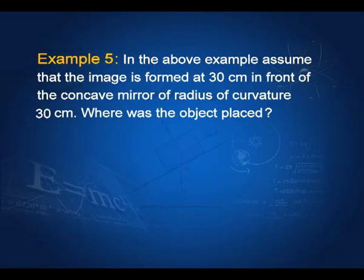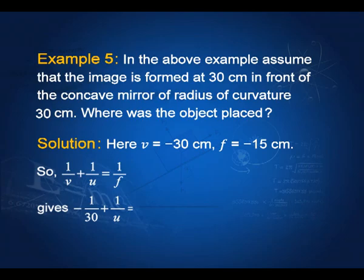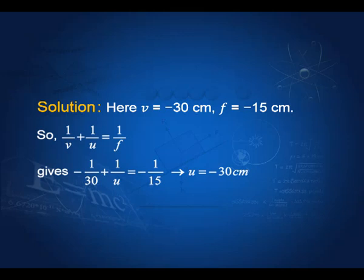Take another example. Assume the image is formed at 30 centimeters in front of a concave mirror of radius of curvature 30 centimeters. Where was the object placed? We have v equal to minus 30 centimeters and f equal to minus 15 centimeters. The mirror formula 1/v + 1/u = 1/f — remember this as a key formula for the concave mirror, always applying appropriate signs — gives u equal to minus 30 centimeters. So v and u are both minus 30, meaning the image is formed at the same point as the object, which is at 2f.